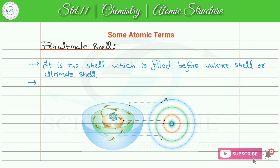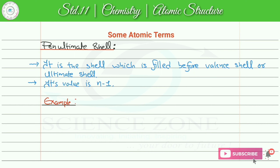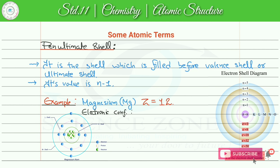Valence shell की value n थी, तो pen ultimate shell की value होगी n-1, that is one less than ultimate shell. Example के लिए एक element select कर रहा हूं, that is magnesium, symbol Mg, atomic number 12. Electronic configuration लिखने के लिए magnesium के 12 electrons fill करने के लिए we need three shells। तो n की values होंगी one, two, and three, और shells होंगे K, L, and M।